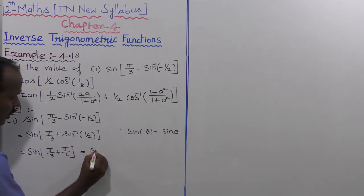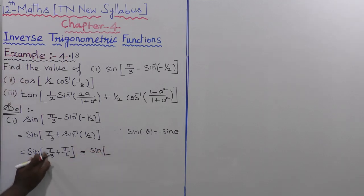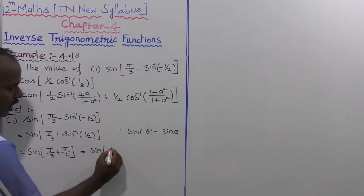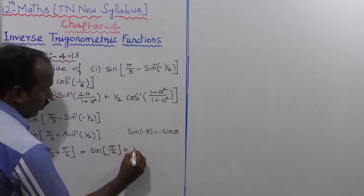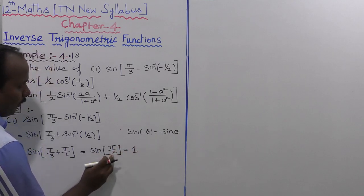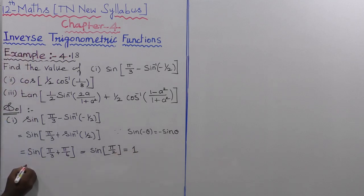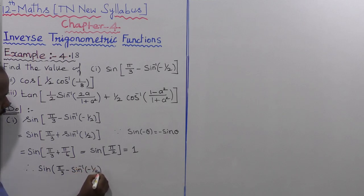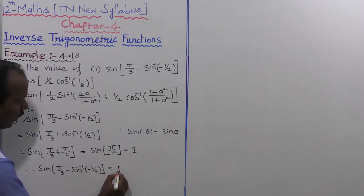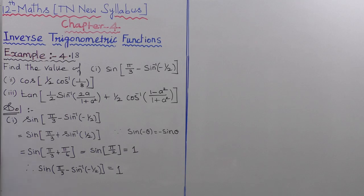So we have sin(π/3 + π/6), which is sin(60° + 30°) = sin(90°) = sin(π/2) = 1. Therefore, the first subdivision sin(π/3 - sin⁻¹(-1/2)) equals 1. The first part is completed.